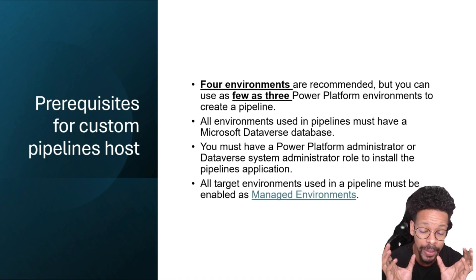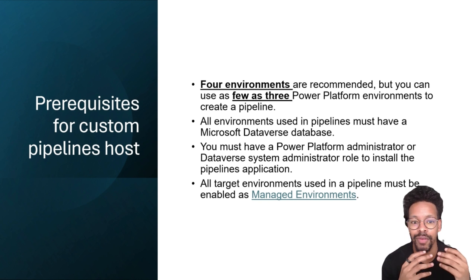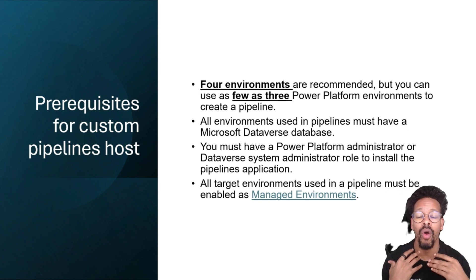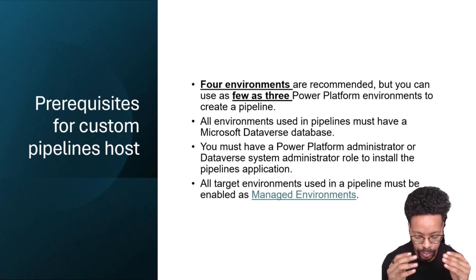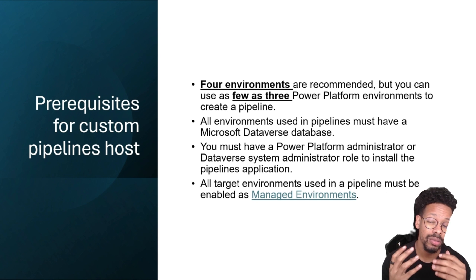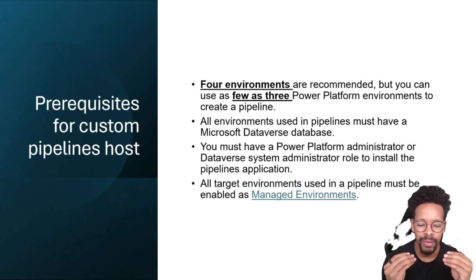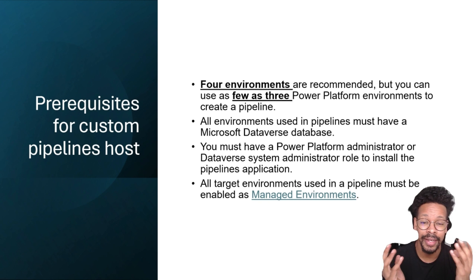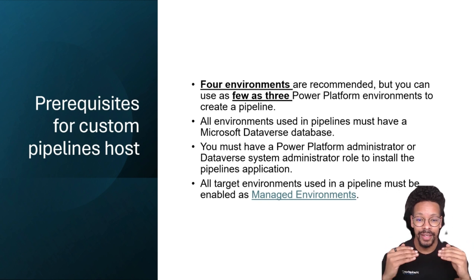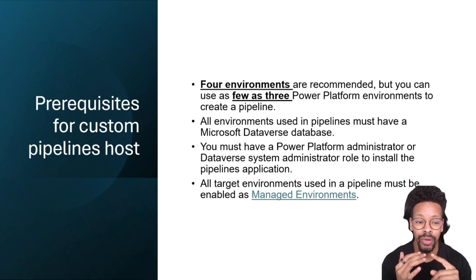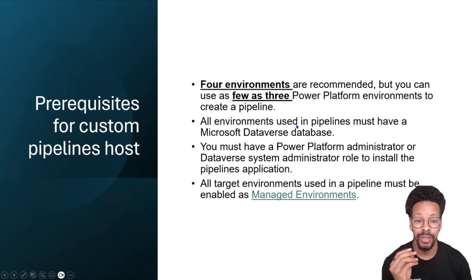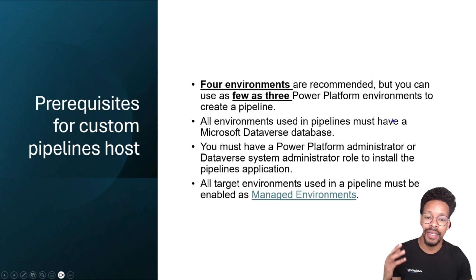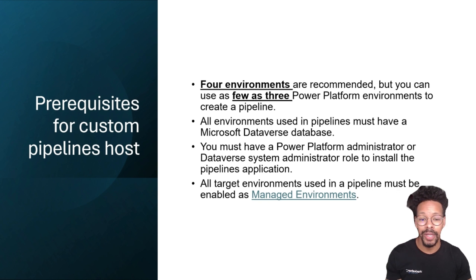Let's begin with the requirements for the custom pipeline host. There are two types of pipelines: the platform host that comes default to the platform, where makers can create their own personal pipelines, and the custom pipelines which admins have to create. You need at least three environments, you need to create groups that will access this, and you need to set up the deployment pipeline, which we will do in this video. All environments need to have a Dataverse database, and you need to be a Power Platform admin or system admin to install the pipeline application.